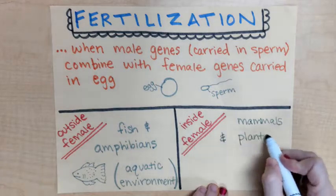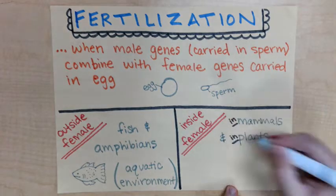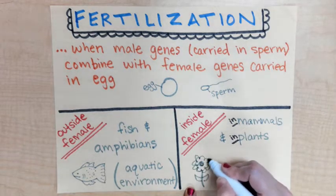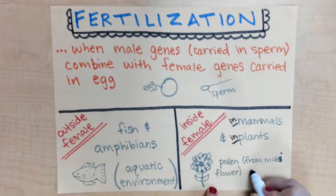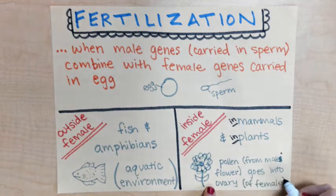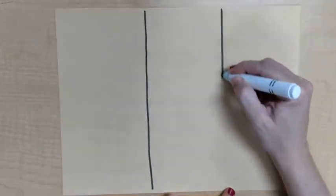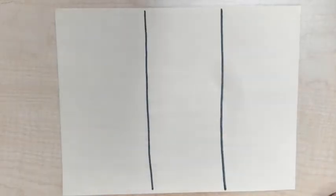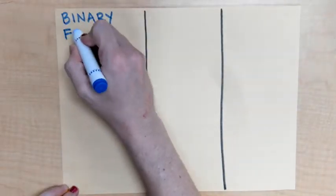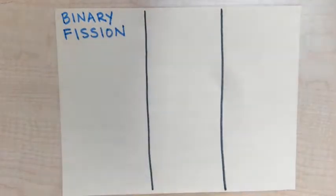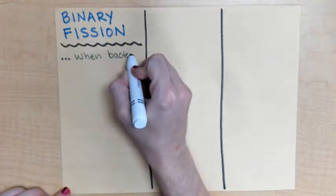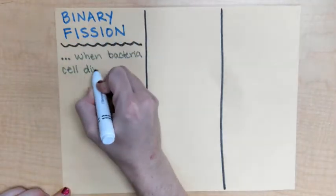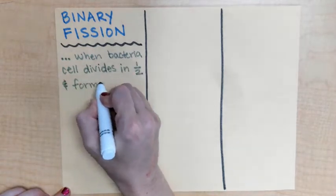This also happens with plants, where that fertilization takes place inside the female. When you talk about asexual reproduction, there are different types or ways that organisms can reproduce. One of them is what we call binary fission.